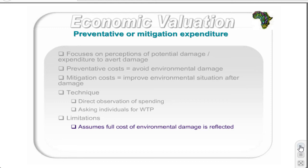Furthermore, the preventative or mitigatory measures can only prevent or correct damage up to a certain level. Secondly, it assumes that there are no additional benefits, as in the case of the replacement cost method, which would result in an overestimate of the environmental value.